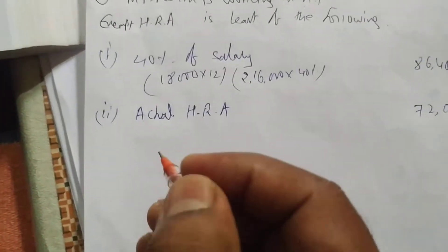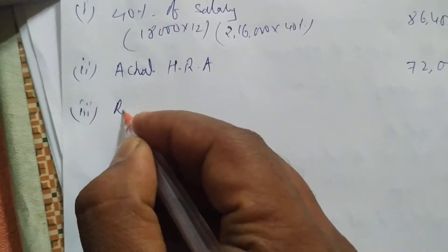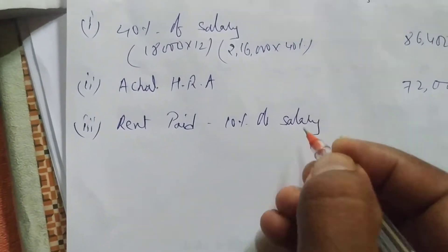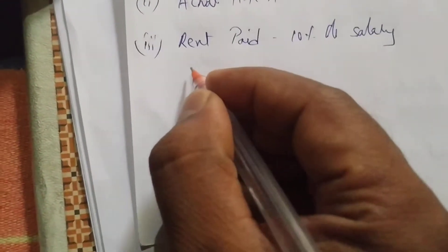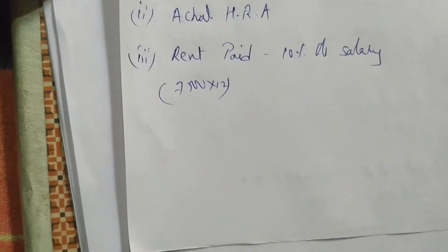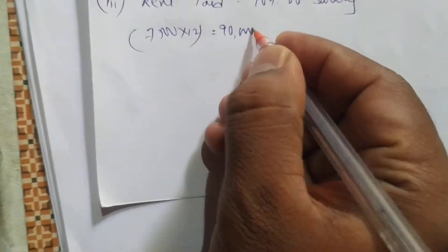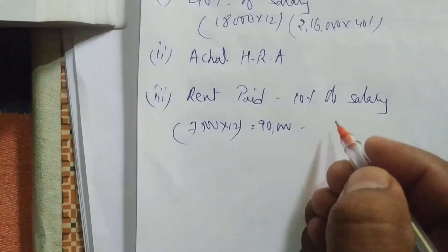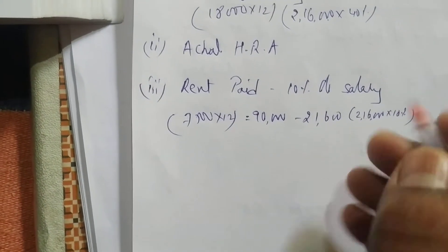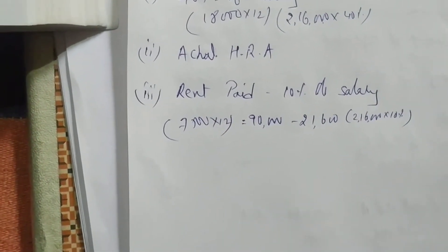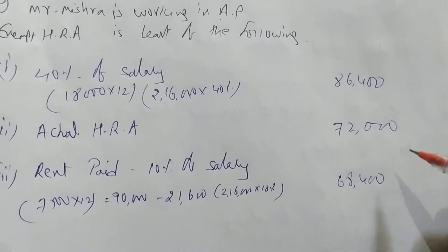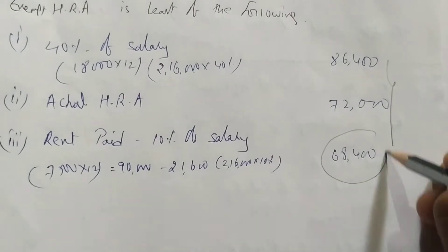Third: rent paid minus 10 percent of salary. Rent paid is 7,500 per month into 12 = 90,000. 10 percent of salary means 10 percent of 2,16,000 = 21,600. So 90,000 minus 21,600 = 68,400. The least of the three values — 86,400, 72,000, and 68,400 — is 68,400. So exempted HRA is 68,400.